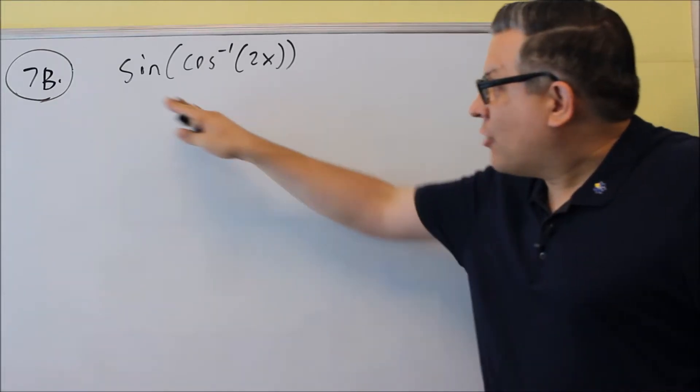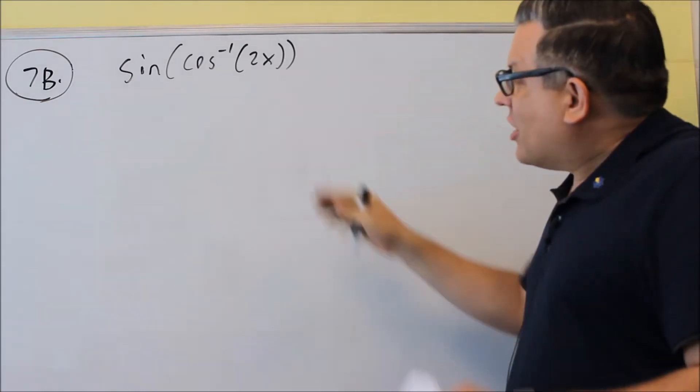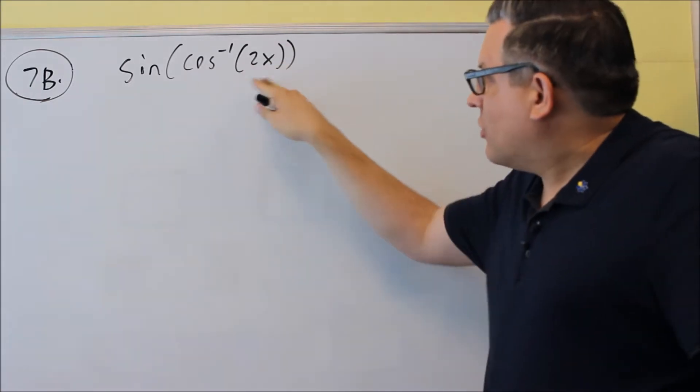7b, again we're finding an algebraic expression for this. The instructions say assume x is positive and that this is all defined.